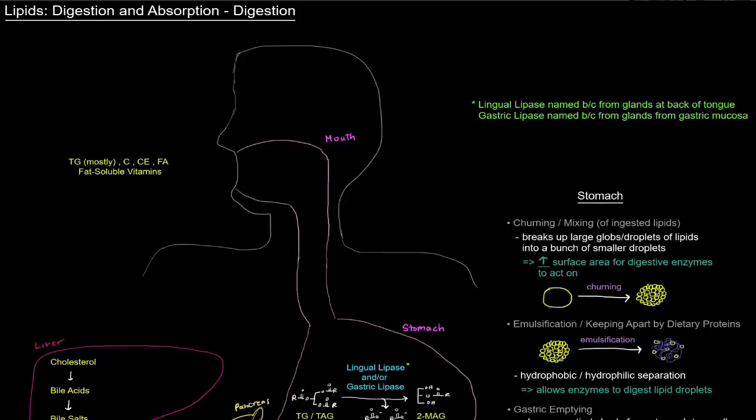Okay, so in this video I want to begin our discussion of lipid digestion and absorption by starting off specifically with digestion. So we're going to start off out here with some dietary lipids, including mostly triglycerides, as well as some cholesterol, cholesterol esters, free fatty acids, and fat-soluble vitamins. And they're going to enter the mouth.